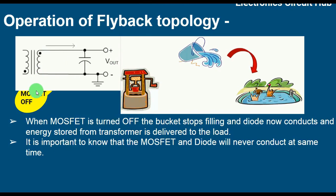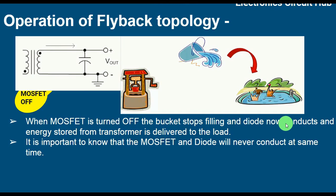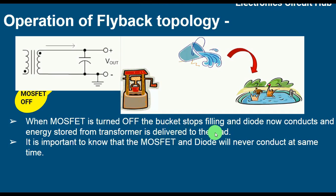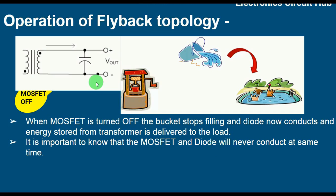Now let us understand the MOSFET off time — what happens during the off time of the MOSFET. On the output or secondary side, the diode is now conducting and current flows through it. When the MOSFET is turned off, the bucket stops filling and the diode now conducts. The diode conducts and energy stored in the transformer primary winding is delivered to the load. It is important to know that the MOSFET and the diode will never conduct at the same time — either the MOSFET conducts or the diode conducts, but never both together.